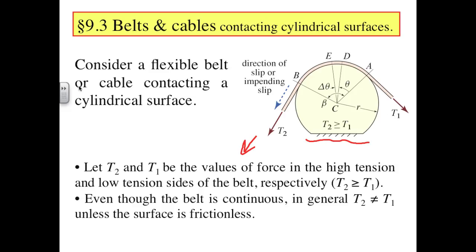In the case of torque transmission, the source of motion is a motor or other device providing the driving rotational motion, and the belt reacts to the cylinder's motion. The difference in driving motion does not alter the relationship between the pulley tensions, but it can change what we call the high side tension and the low side tension. In these problems, we want to identify the source of motion first to determine where the tension is high and where it is low.